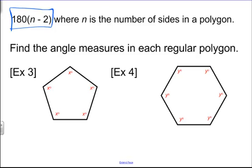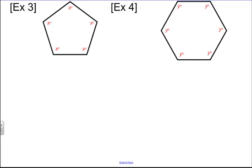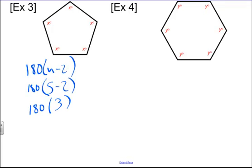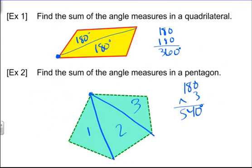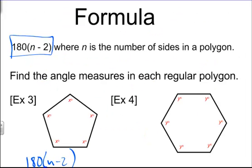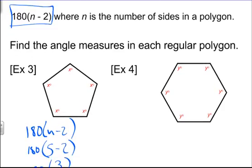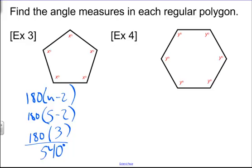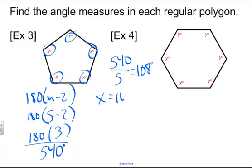Find the angle measures in each regular polygon. For number 3, it has 5 sides, so plug into the formula: 180 times (5 minus 2) equals 180 times 3, which is 540 degrees — same as we found with the triangle method. Since it's a regular pentagon with 5 equal angles, divide 540 by 5 to get 108 degrees. So x equals 108 degrees.